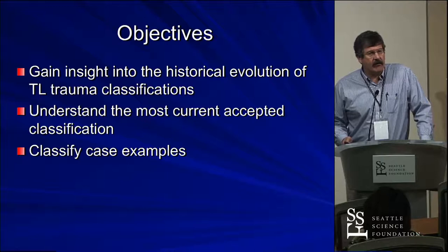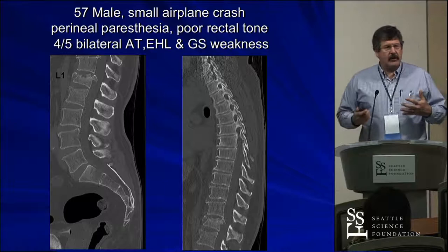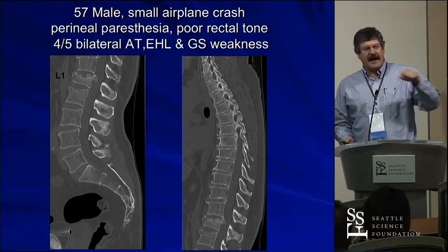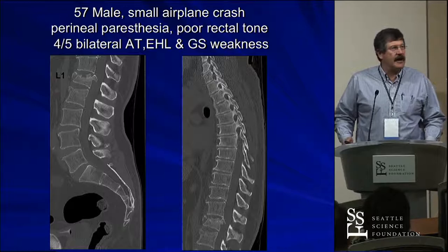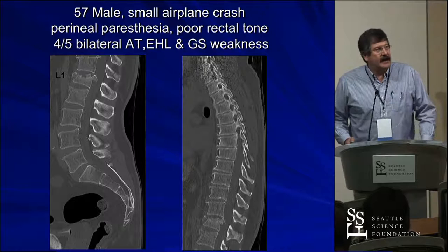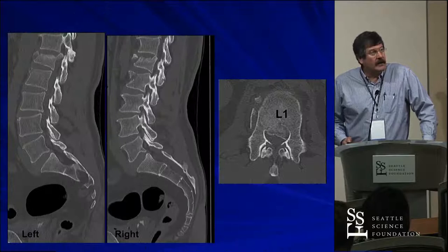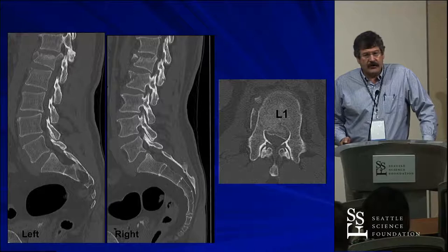As something we could think about as we go through: this is a 57-year-old male who was in a small airplane crash. His brother, an orthopedic surgeon from Alabama, flew up to pick him up in West Virginia to fly him back for the West Virginia-Alabama game, and they wrecked taking off from Morgantown. Him and his brother had the same injury — one had some deficit, one didn't. This brother had perineal paresthesias, poor rectal tone, and bilateral anterior tibialis and gastroc weakness. You can see his fracture pattern, the CT showing retropulsion and fracture in the posterior facets.